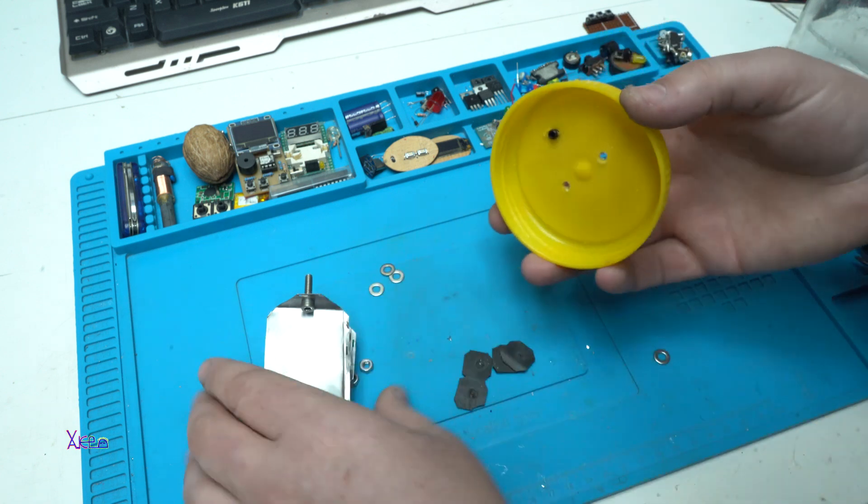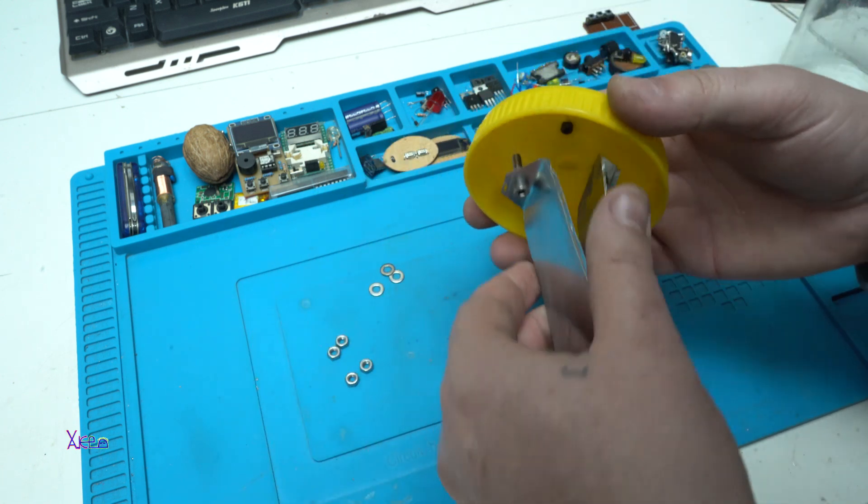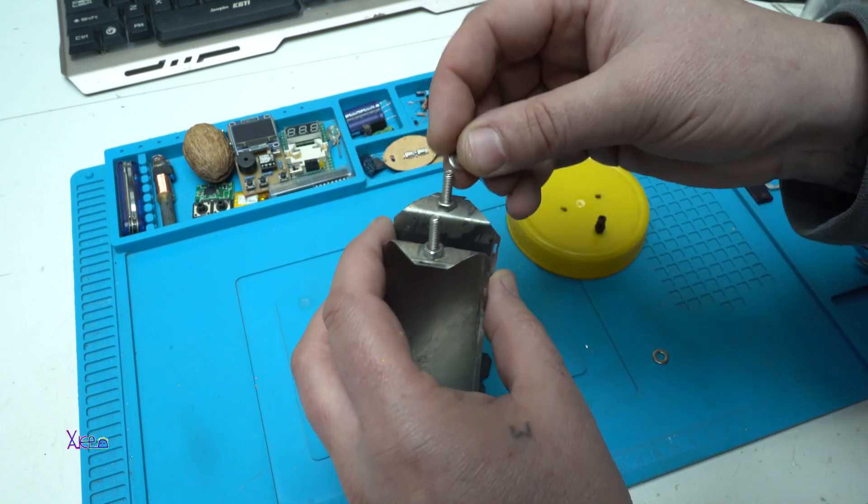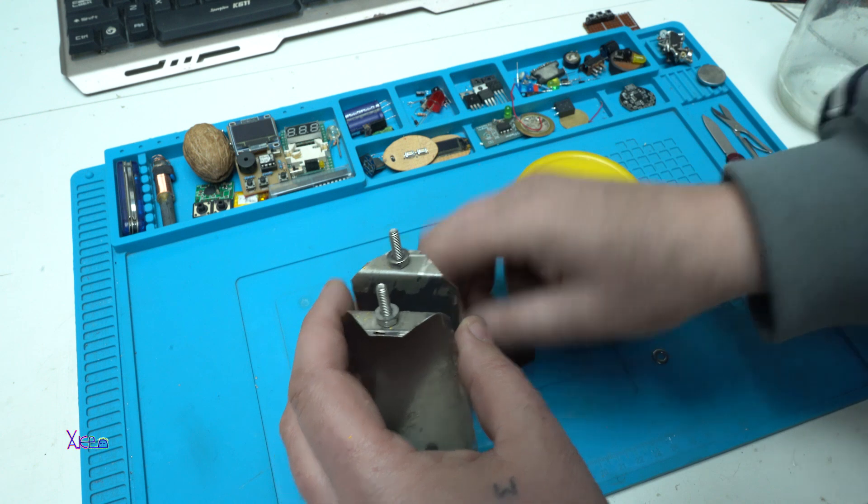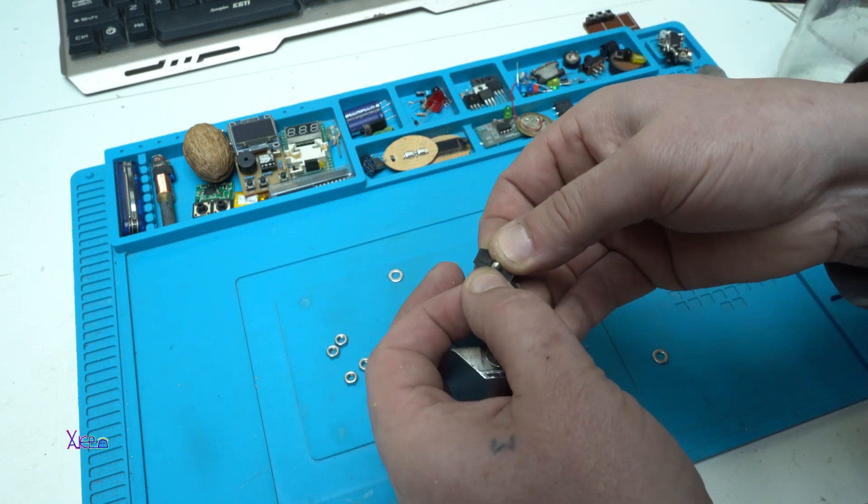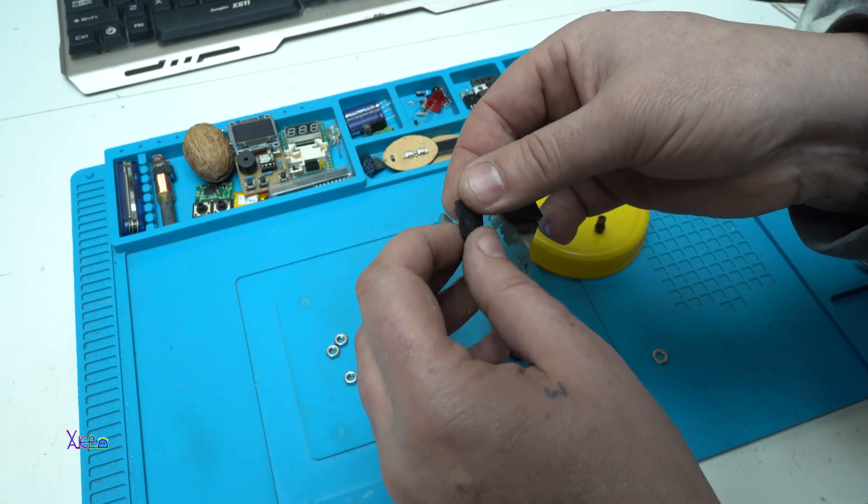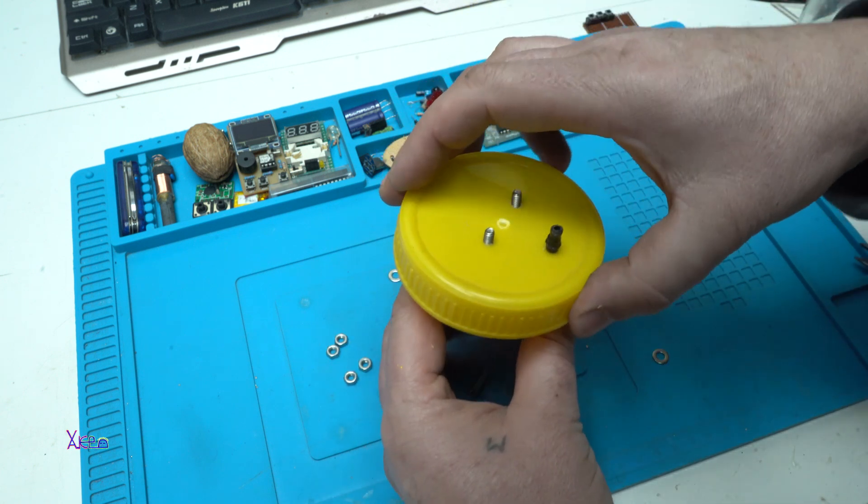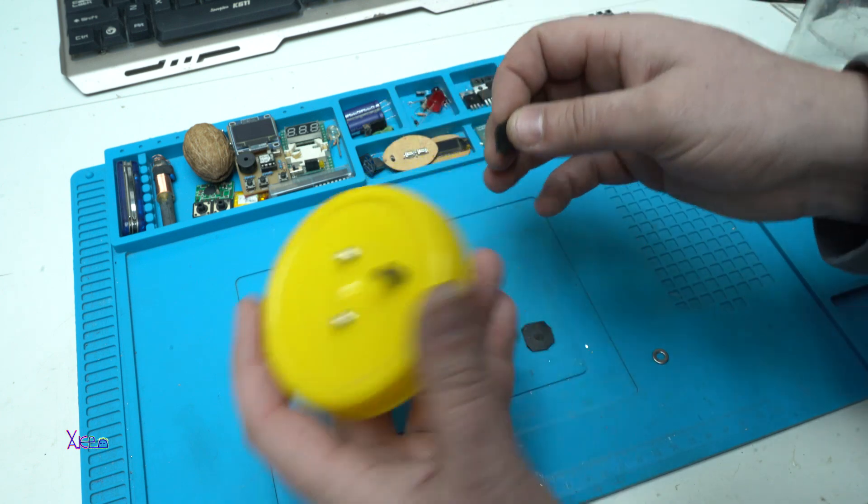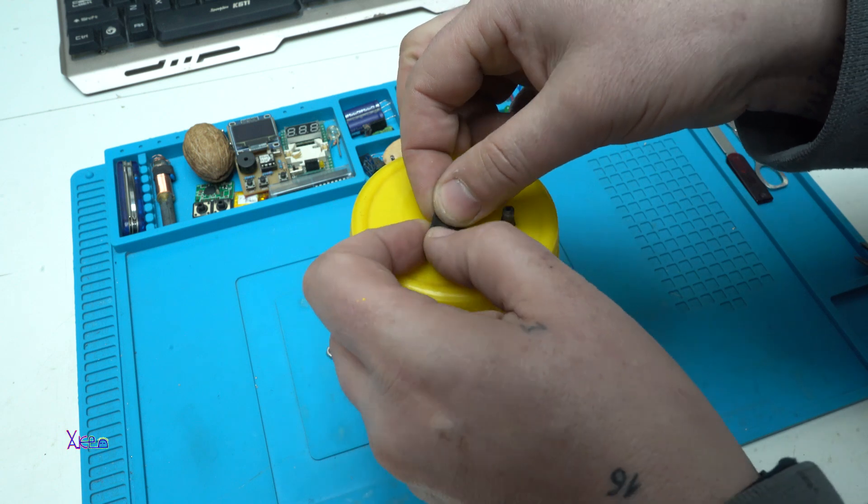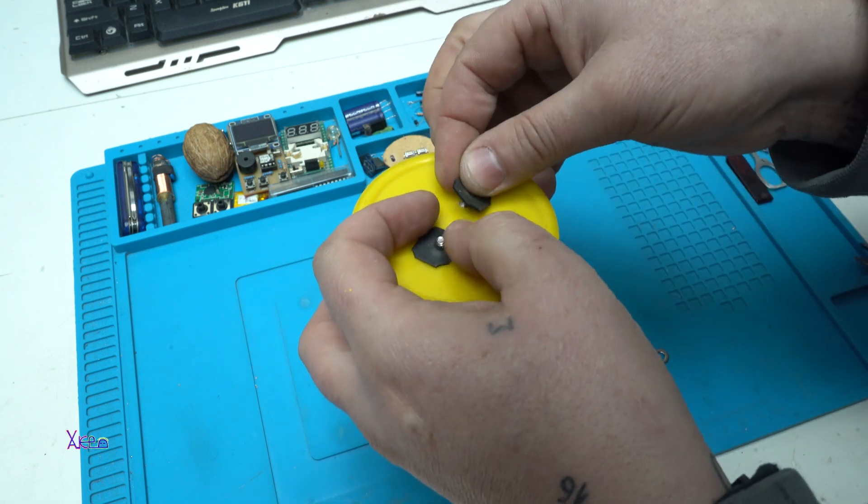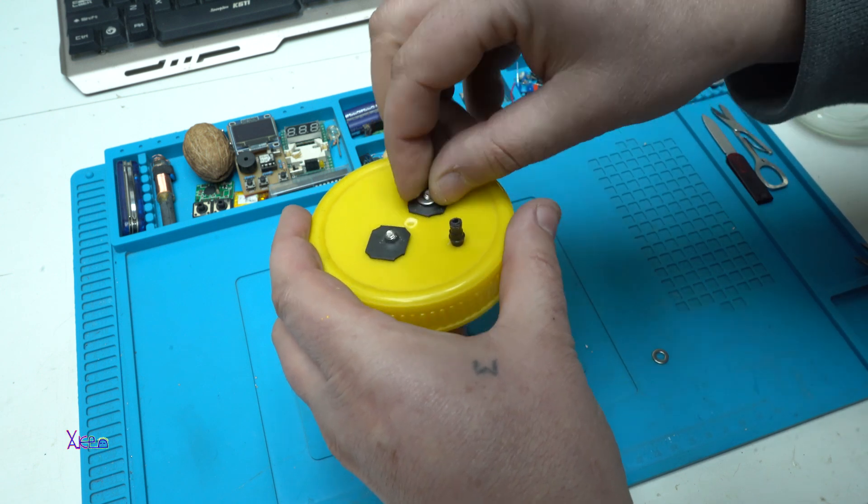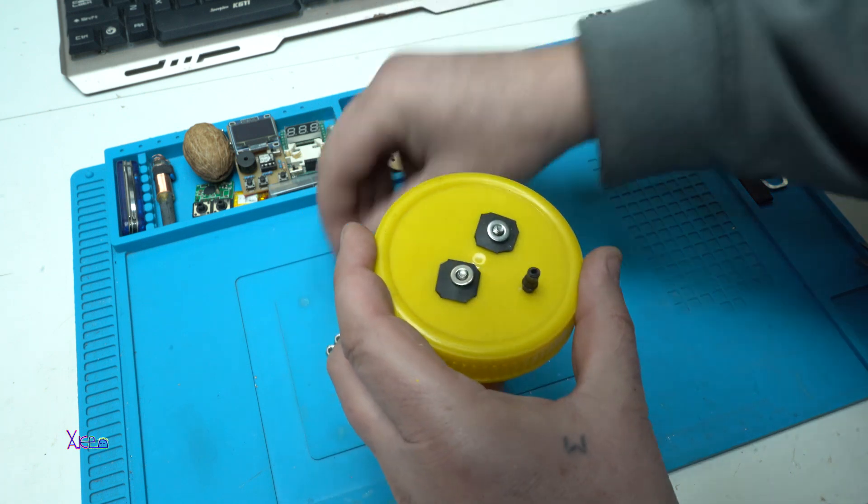But before placing on the lid I'm gonna add some washer on both screws, add insulation that I made myself. It's made from rubber. We have insulation, rubber, here and here, washer and nuts.